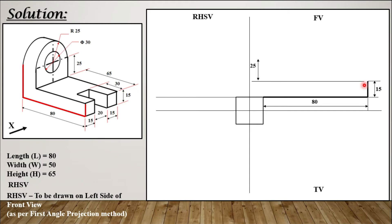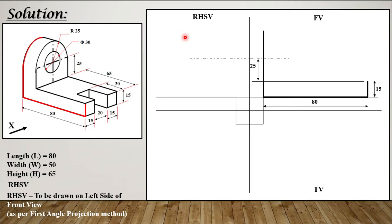We draw a center line here corresponding to the center line of the component. This edge is drawn at this position. Above it, even though it is a curved part, as we saw earlier it will appear as a flat straight line. From the center up to the top, the radius is 25 mm, so you go 25 mm above and stop there.